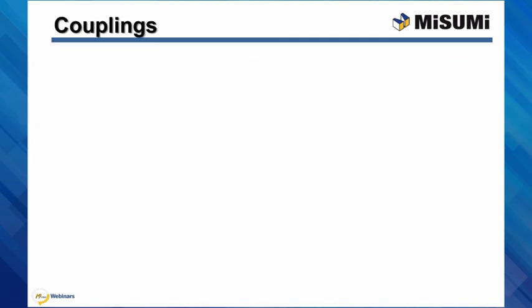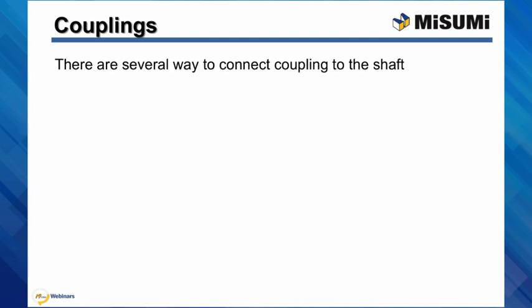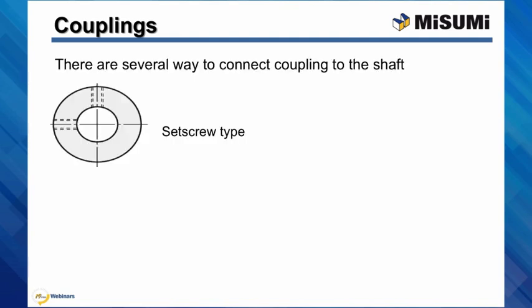There are several ways to connect couplings to the shaft. One is using a set screw. For Misumi couplings, there is usually one or two set screws placed 90 degrees apart. This type of connection is best used when the shaft is softer than the set screw. Unfortunately, the set screw causes damage to the shaft, which makes the coupling harder to adjust or remove. It is common to machine small flats on the shaft at the set screw location to eliminate this problem.